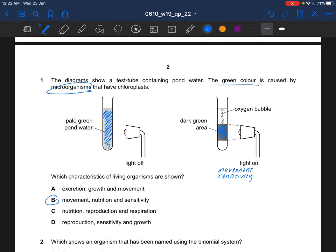Nutrition and also nutrition, because what is happening is photosynthesis. Photosynthesis will produce oxygen. For photosynthesis to occur, they have to take in materials like light, carbon dioxide, and water. So the answer for question 1 would be B.